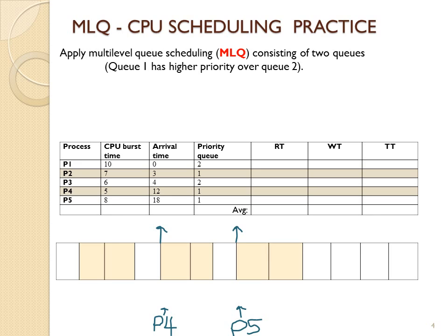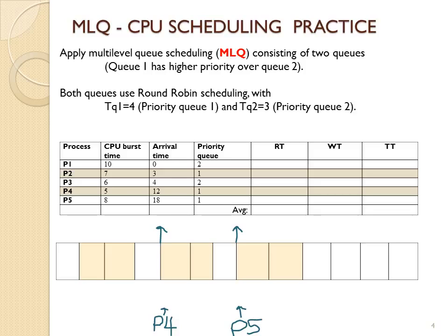This happens to be a multi-level queue exercise. We have two queues — looking at the priority queue column, p1 is priority queue 2 and p2 is priority 1. Any higher priority process will preempt a lower priority process. Since this is multi-level queue, p1 stays in q2 permanently. A q1 process uses round-robin with time quantum 4, and a q2 process uses round-robin with time quantum 3.